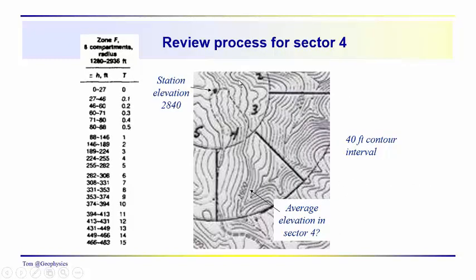So here's another sector. This is sector four. Just to kind of review the process. We already know what the station elevation is. It's 2,840 feet. The average elevation, that's kind of a guess, an estimate on your part. You could think about flooding this compartment with water at the average elevation. And I'm going to say it would sit at an average elevation right here of about, these contour intervals are 40 feet.